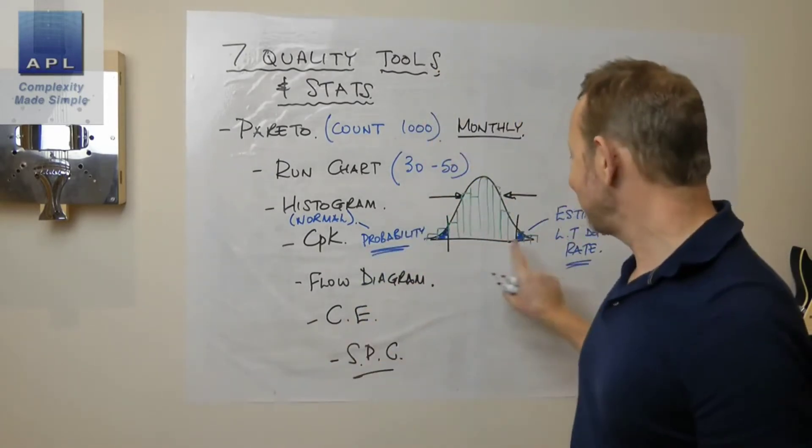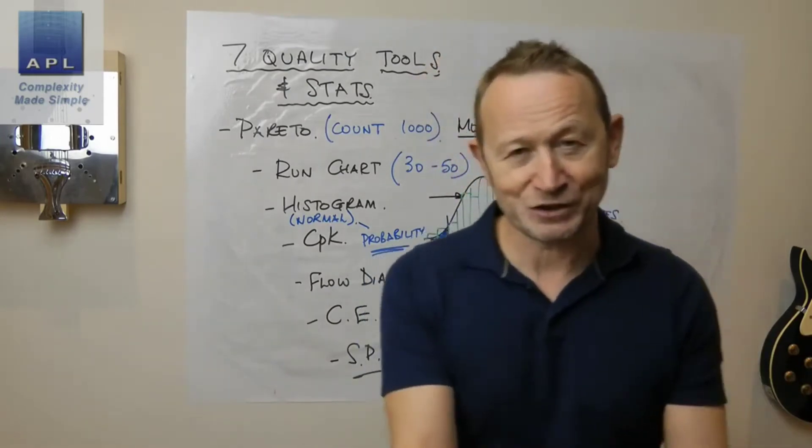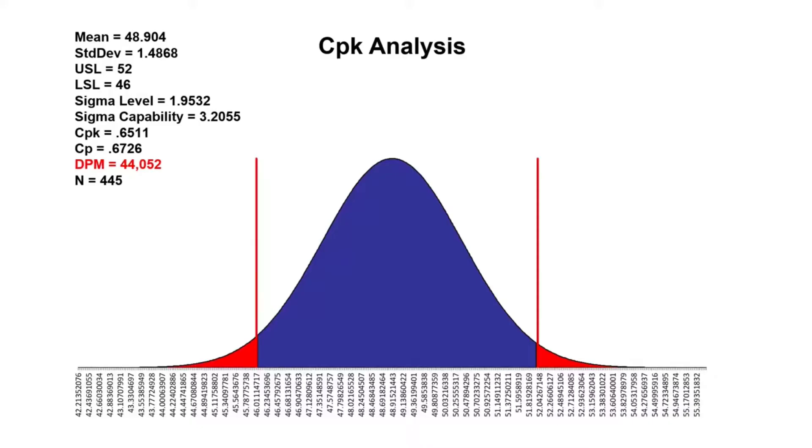If you take a look at this CPK diagram that we've looked at previously in a previous video, you can see defects per million: 44,052. There is the estimated defect rate. It's not an observed defect rate, that is a probability calculation. I'm not doing any probability calculations though, I just know it's there, and therefore I have to check for normality.